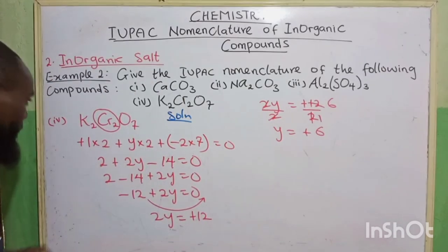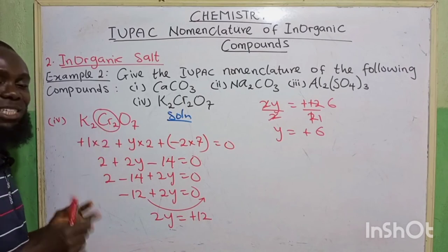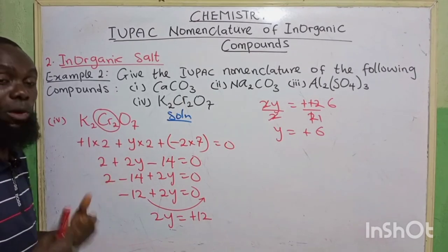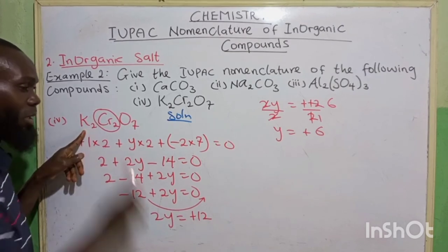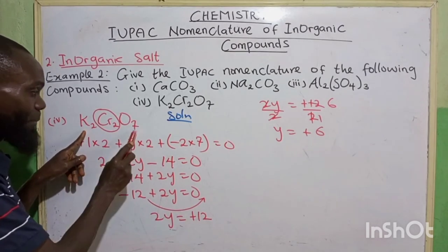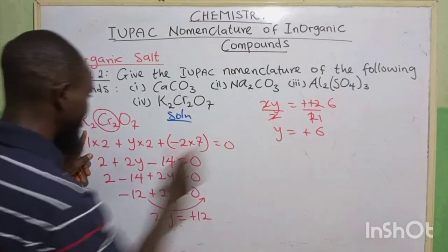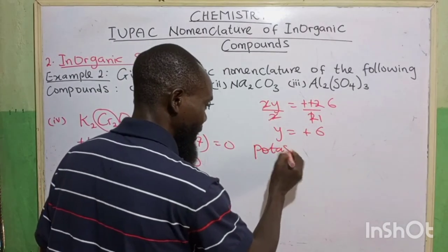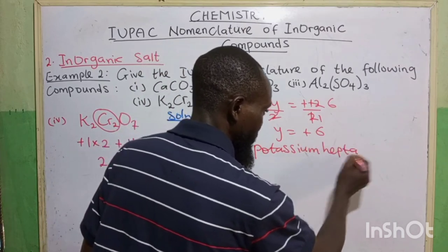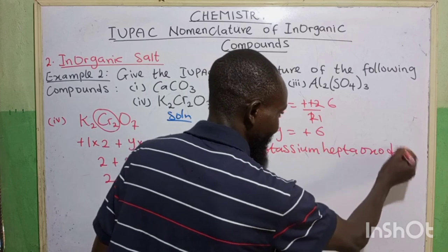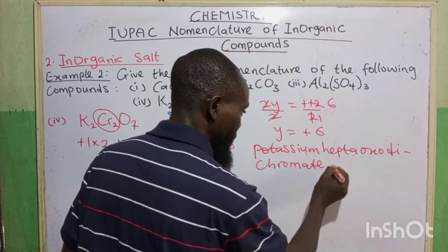Now what will we name it? Chromium is a transition element which has more than one oxidation state. So the name is: potassium heptaoxodichromate(VI). We put dichromate to show the oxidation state of chromium in this compound.